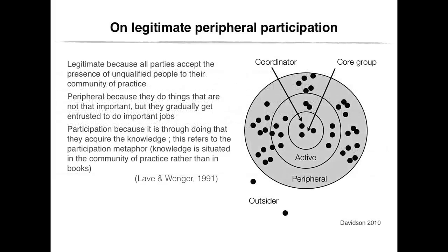Members of a community of practice all have different levels of participation. While some are fully engaged in enhancing the community's knowledge, experiences, and skills — and learning at the same time — others start with peripheral activities. They observe and analyze other members' behaviors, reactions, and feedback, and evaluate the proposed information without really interacting with the community until they become familiar with its members and ongoing activities and feel confident to intervene. Then they move from legitimate peripheral participation into full participation.